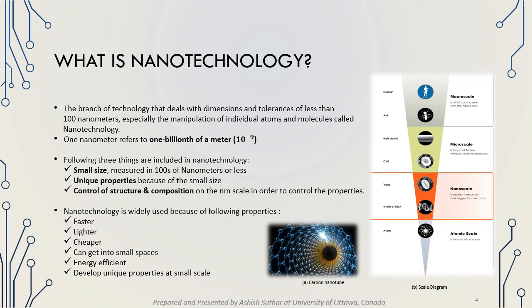Nanotechnology is widely used around the world. It has unique properties — materials are faster, lighter, cheaper, and can fit in very small spaces. They are very energy efficient and can develop unique properties at smaller scales. Nanotechnology has different structures called carbon nanotubes and buckyballs, which enable use in various applications.